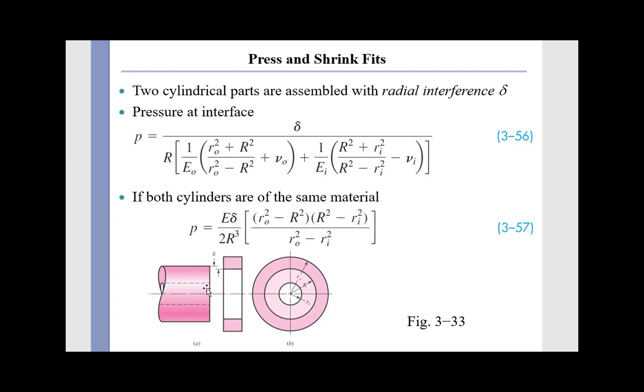Capital R is the radius of the shaft. R outer is the outer radius of the collar, and R inner is the inner radius of the hollow shaft.